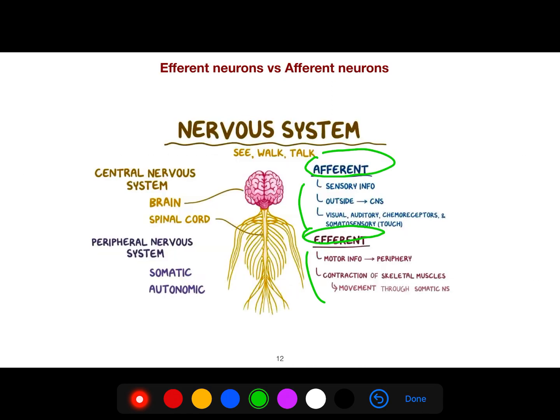The thalamus collects all of these sensory things, auditory, and you can simplify it to say that it is a gateway to the cortex. But it has many other functions as well.